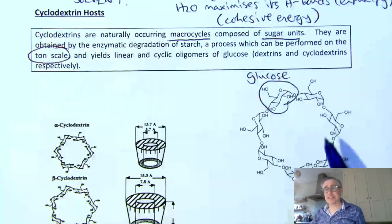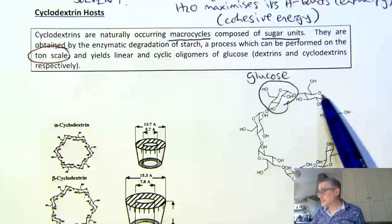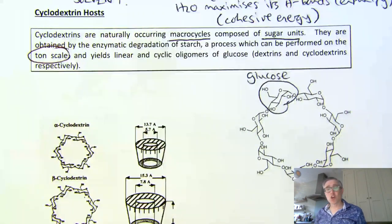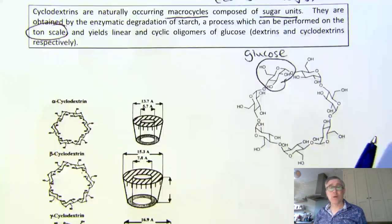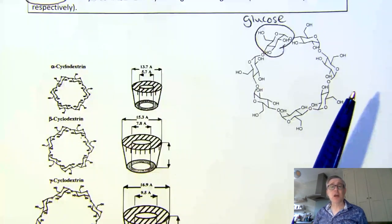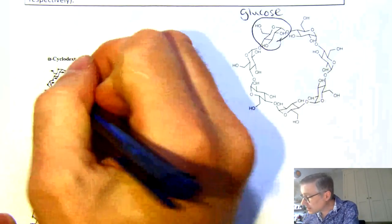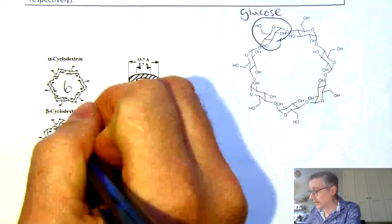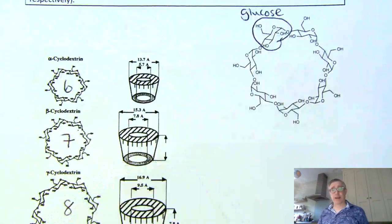In this particular example, there are one, two, three, four, five, six, seven glucoses in a ring. By this enzymatic degradation, we can make rings of different numbers of glucoses — we could have six in a ring, seven in a ring, or eight in a ring.